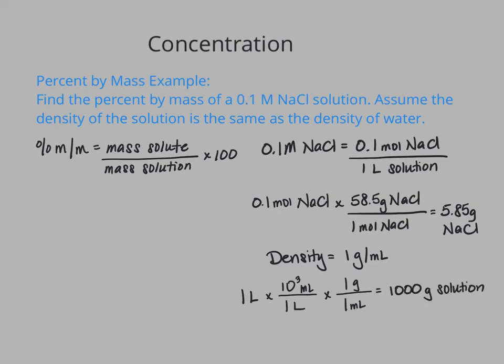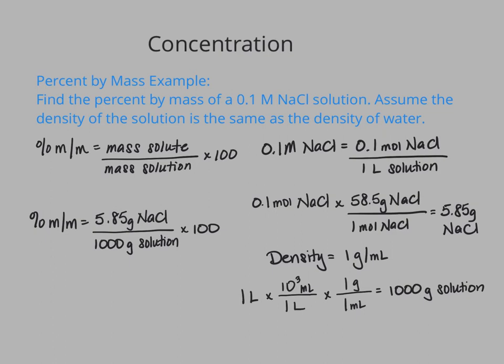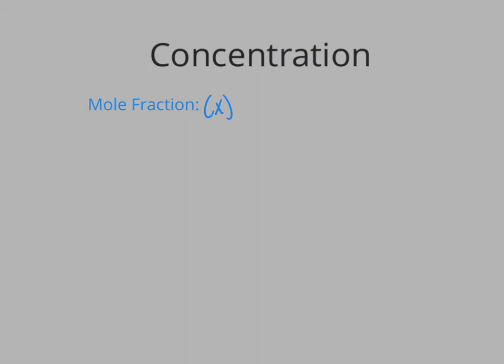Now finally, I have my mass of solution as well, so I can plug that into my equation. For my percent by mass, I take my 5.85 grams of sodium chloride, divide that by 1000 grams of solution, multiply by 100. And my final answer after all that work is a percent by mass equal to 0.585%.